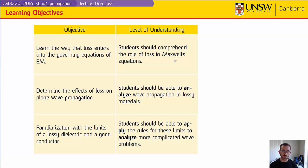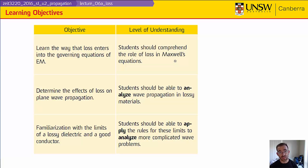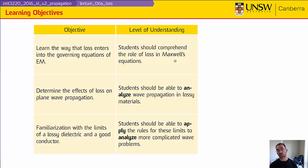There are no perfect dielectrics — completely lossless dielectrics — and there are no perfect electrical conductors. But there are many materials which come close to approximating them under particular sets of circumstances. We need to be able to apply the rules for these two limits, understand when they're valid, and be able to analyze more complicated problems by using these approximations.